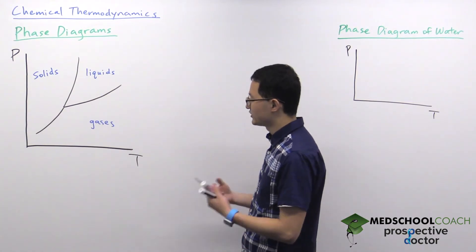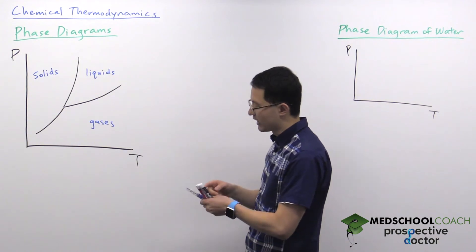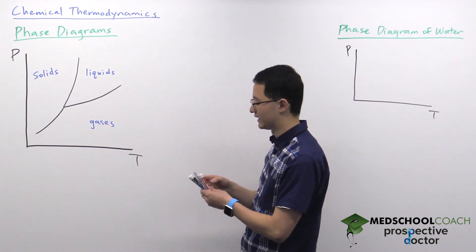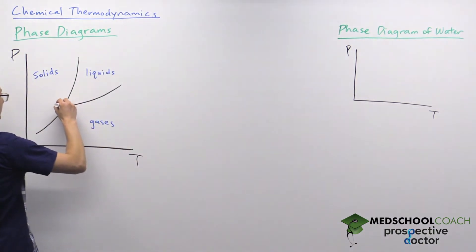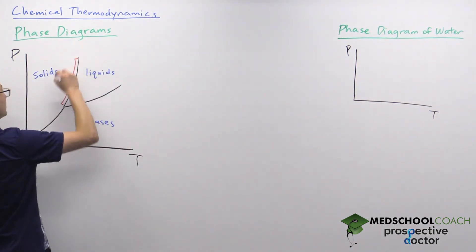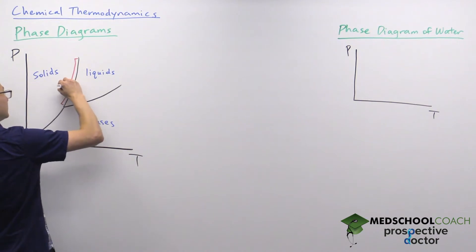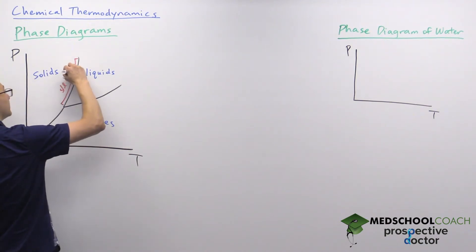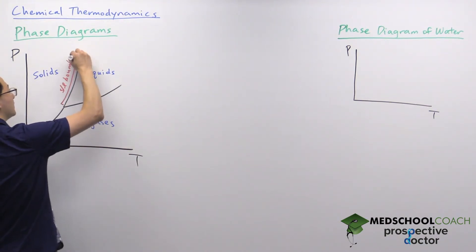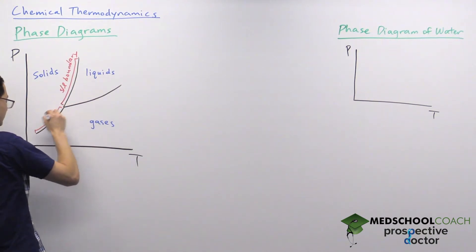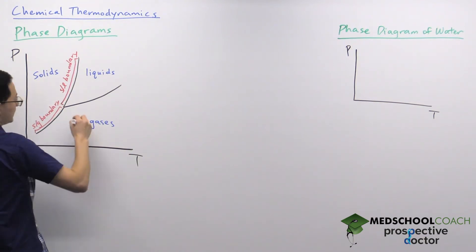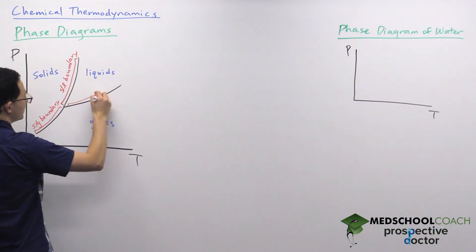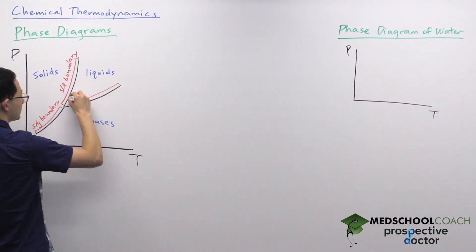There's some additional information you should know about the graph. First, we have boundary lines. There is the solid-liquid boundary, then we also have the solid-gas boundary, and finally we have the liquid-gas boundary.